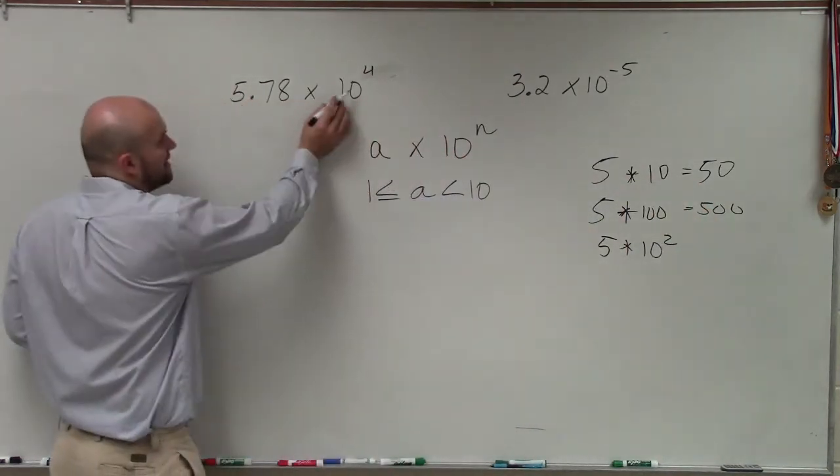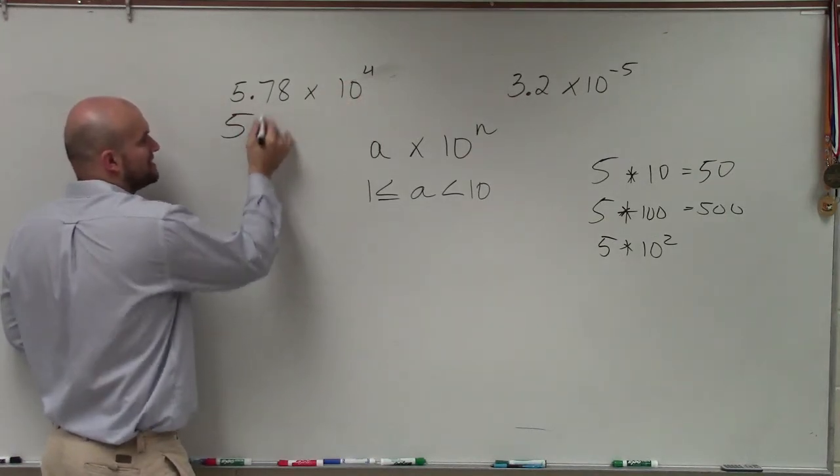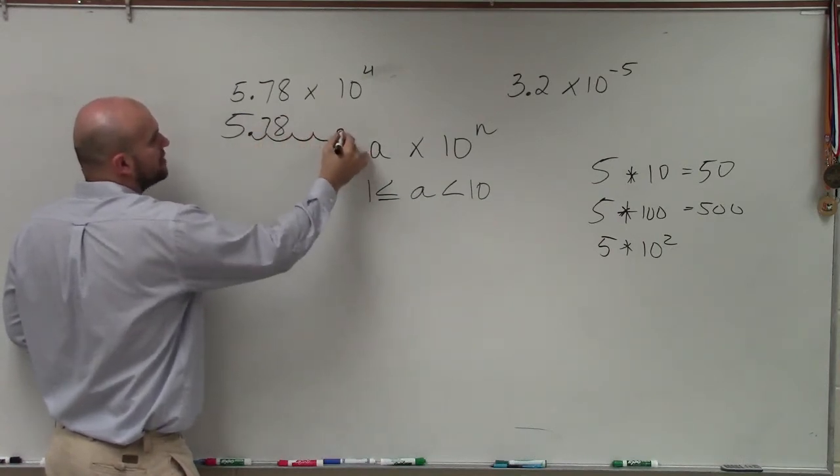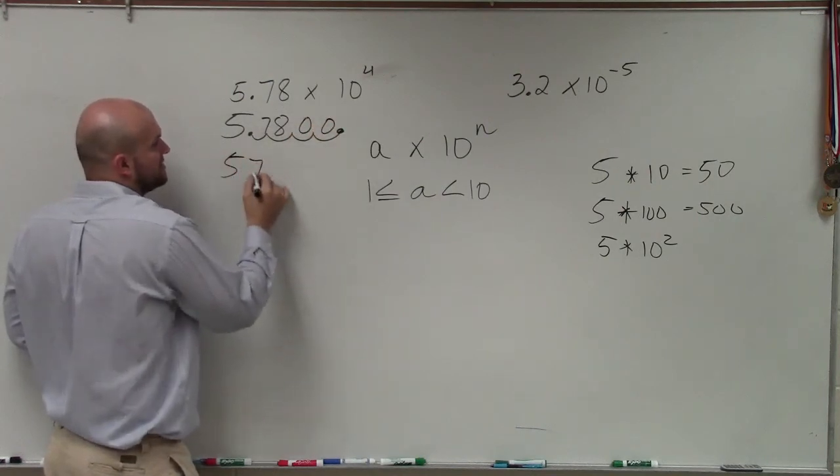So Harris, when I have to multiply this by 10 to the fourth, basically, all I'm going to do is take my decimal point and move it over 1, 2, 3, 4 place values. And then for these missing place values, I'm going to put in 0.